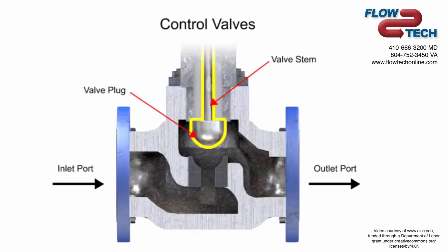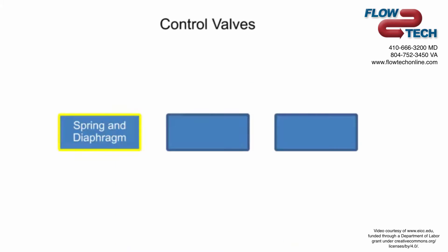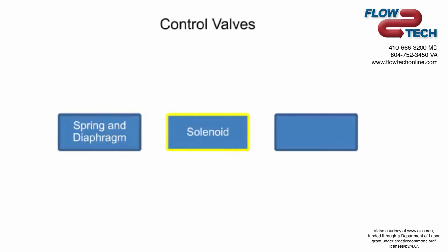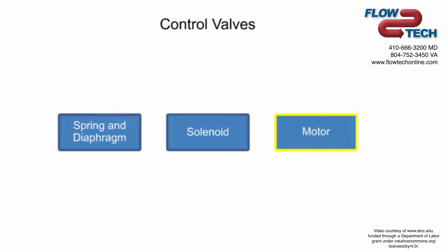Three actuator types are used in control valves, and they include spring and diaphragm, solenoid, and motor.